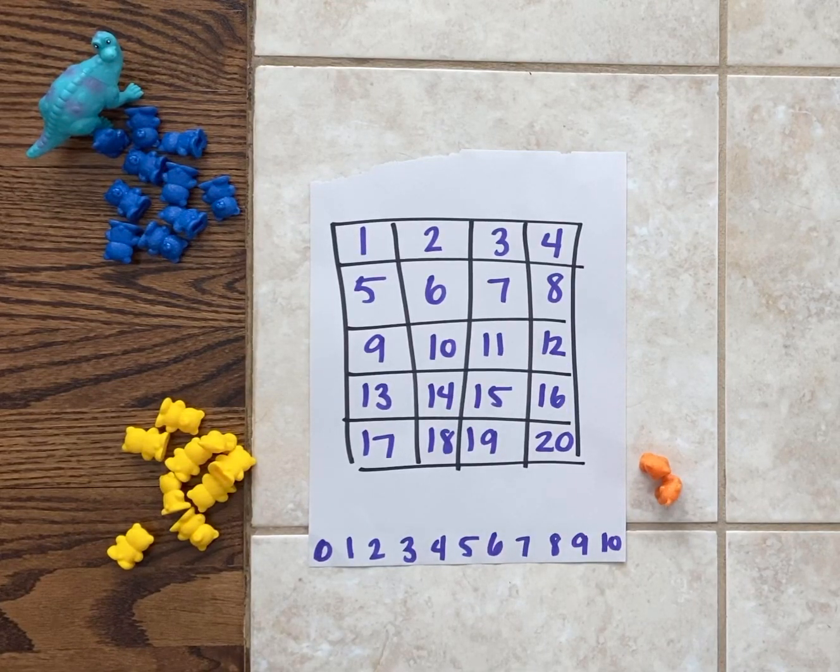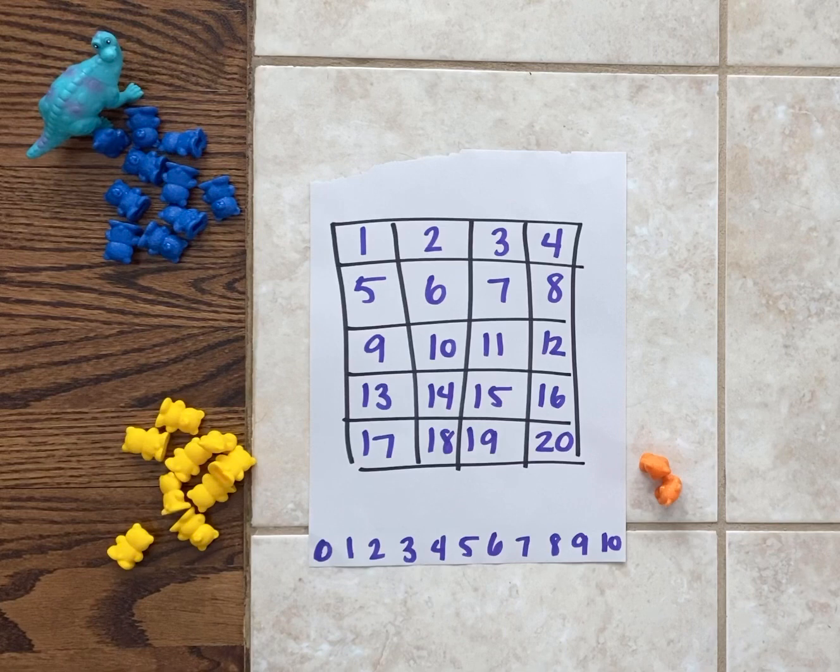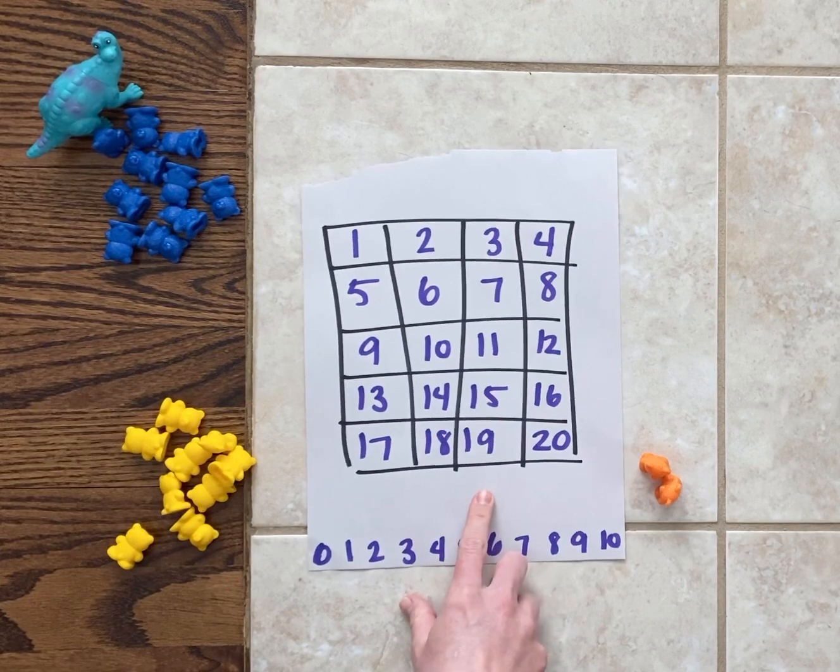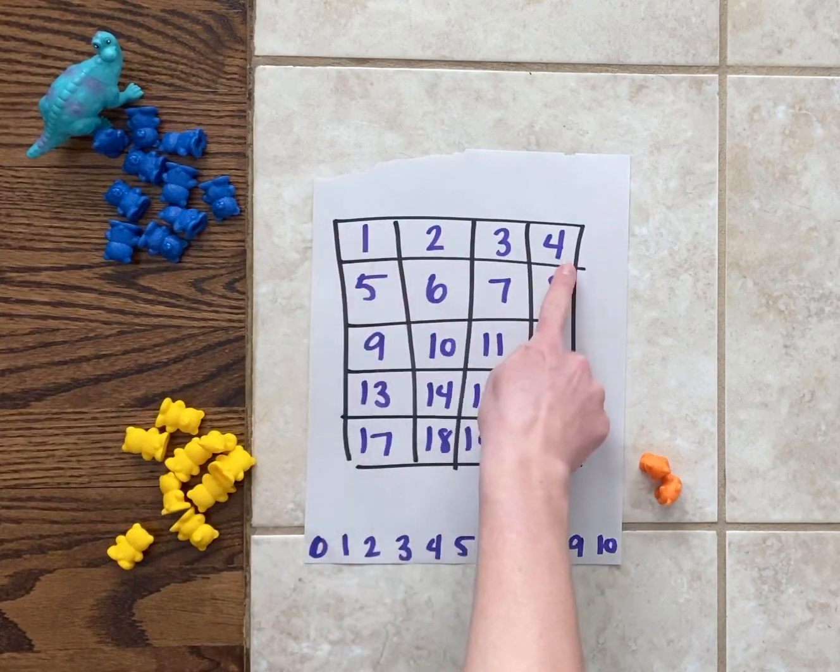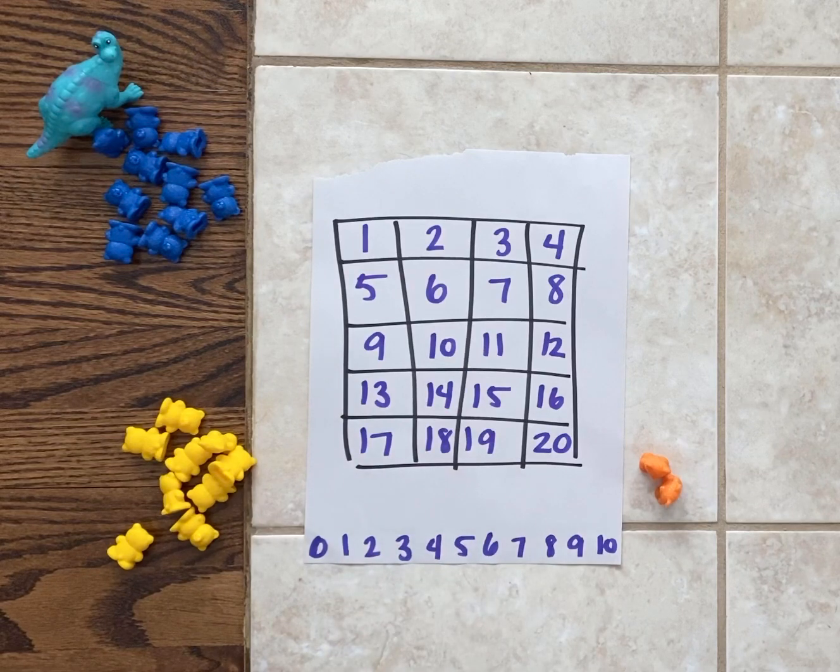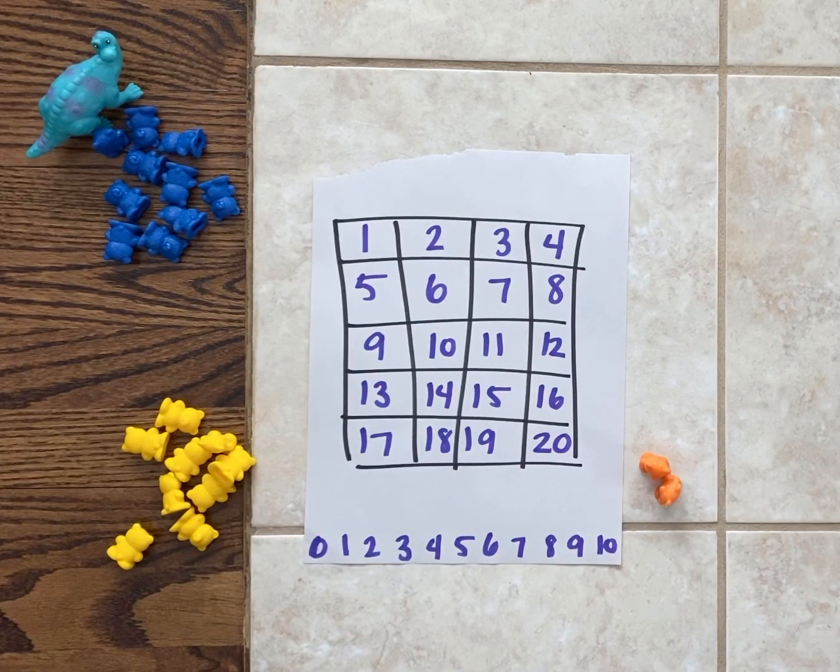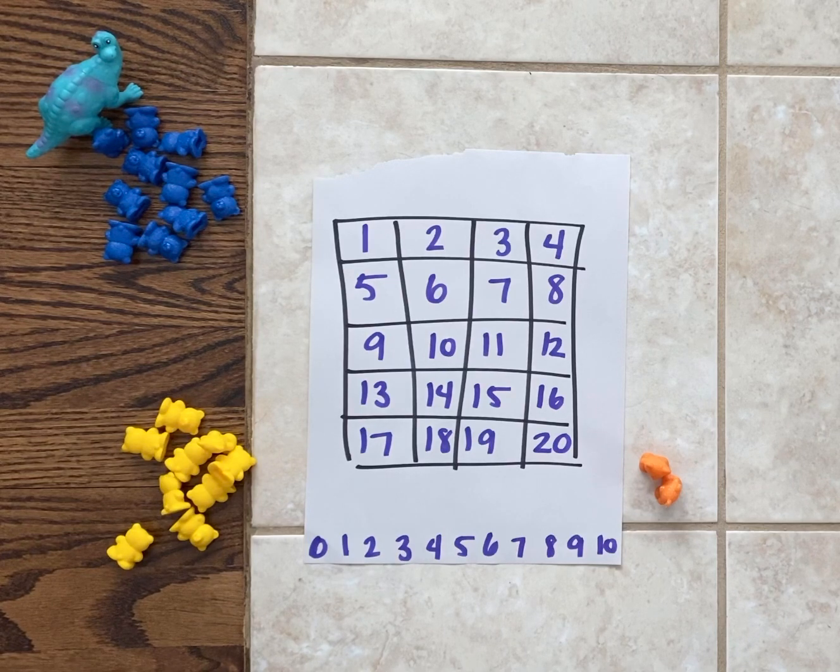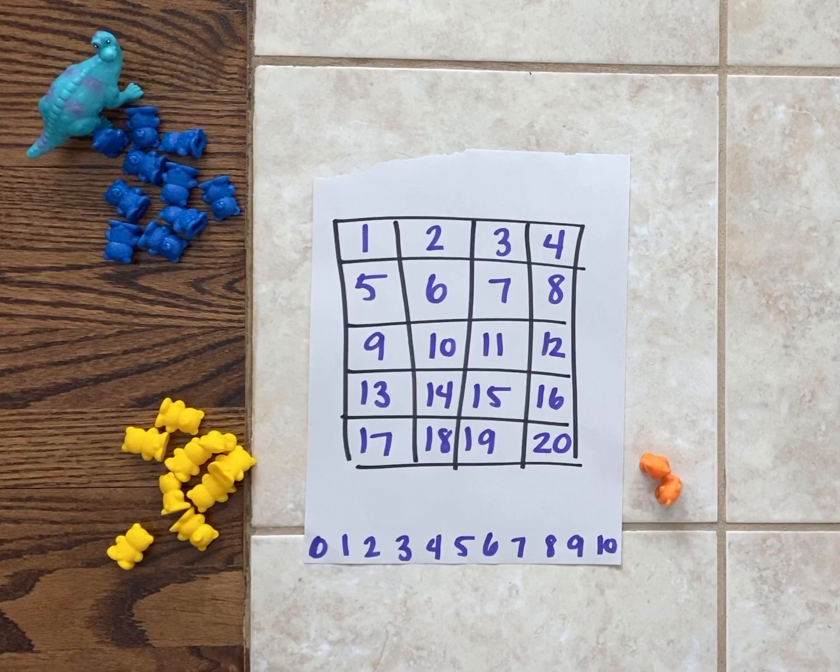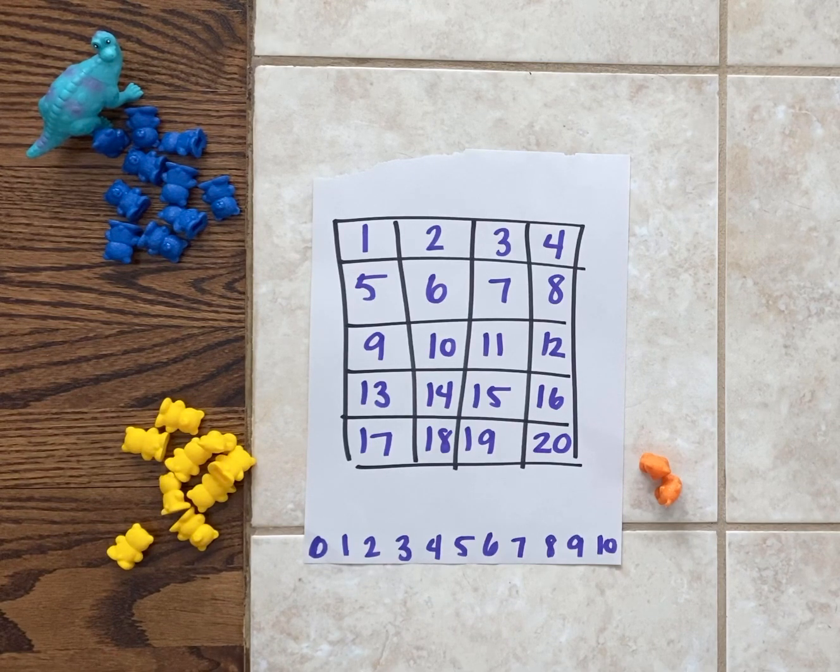This game is called the sum game. For this game you will need a game board that looks like this. It is a 4 by 5 grid with the numbers 1 through 20 written on it. If you don't have a board like this already from a previous play, you're going to want to pause this video and make this board.